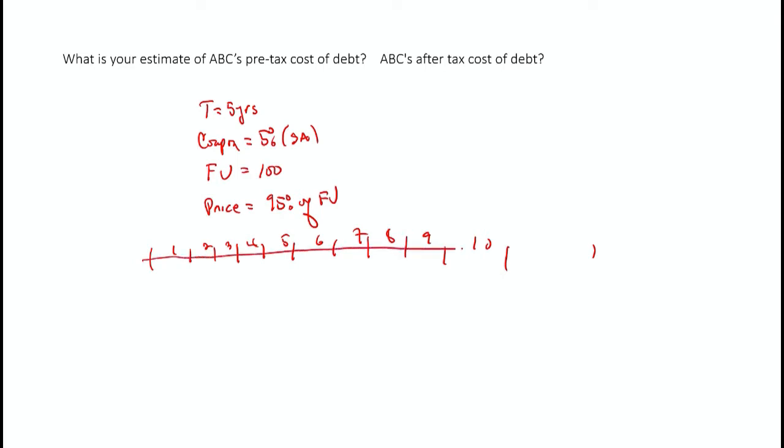We have 10 payments of $2.50 each, every 6 months, because it's a 5% coupon divided by 2 for semi-annual payments. The final payment is the face value of 100 plus the coupon payment, so 102.50, and the price with a face value equal to 100 is 95.